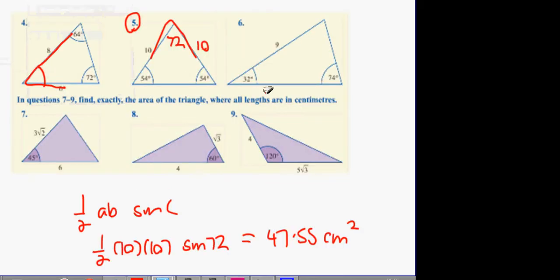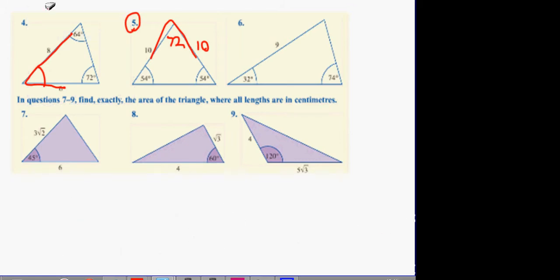All right guys, next one number six. If you look at number six, what I suggest you do is the sine rule to find out what this length x is. So you go x over sine 32 equals nine over sine 74.